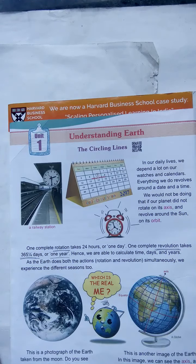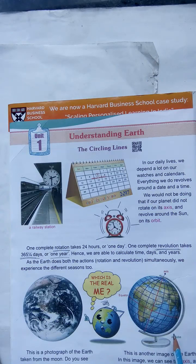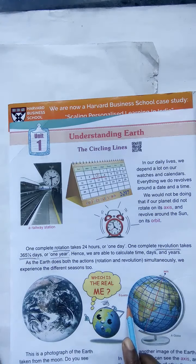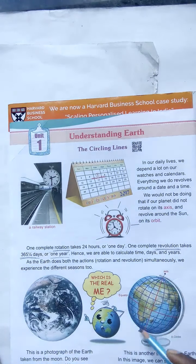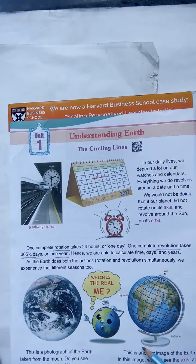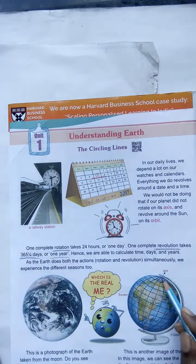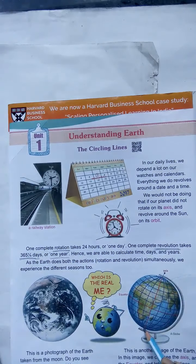Latitudes and longitudes are imaginary lines drawn on the earth surface. The latitudes circle the globe in the east-west direction. These are called latitudes. The longitudes run from the north to south and meet at the pole. These lines we call longitudes.